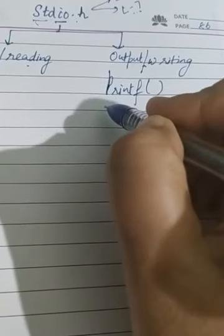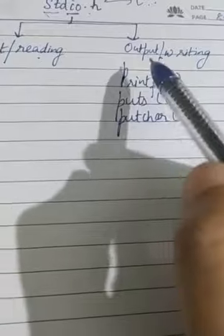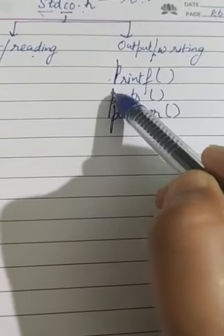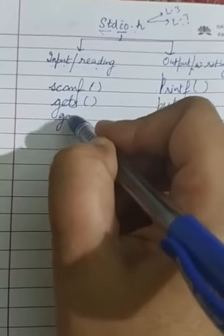Input functions are also called reading functions and output functions are called writing functions — this is a very important point. There are 6 functions to study: the output functions are printf, puts, and putchar; and their corresponding input functions are scanf, gets, and getchar.